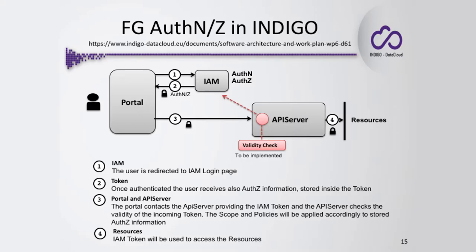The user contacts the Indigo IAM system — in Indigo the authentication and authorization component is named IAM. This component returns the token. The token is sent from the portal to the API server. The API server checks the validity of this token for each REST call, and if the token is good, the API server will send it to the resources. The resources can be accessed or not according to the authorization information contained in the API server and the token.